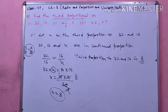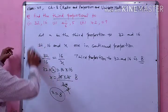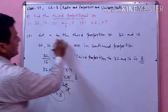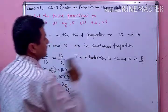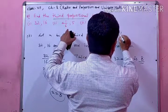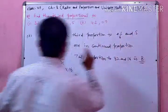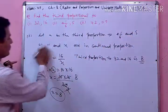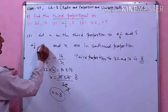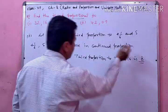अब इसके बाद देखिए second part। Second part के अंदर देखिए — let x be the third proportional to 4 and 1/6 and 5. तो यहां 4 and 1/6, 5 and x are in continued proportion.